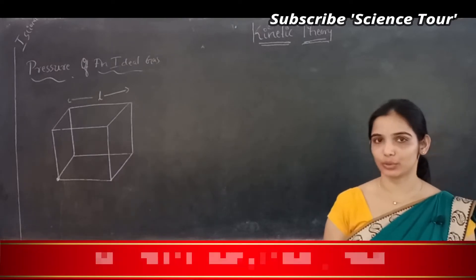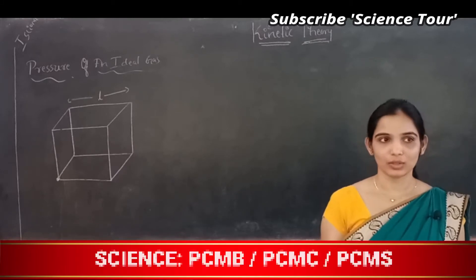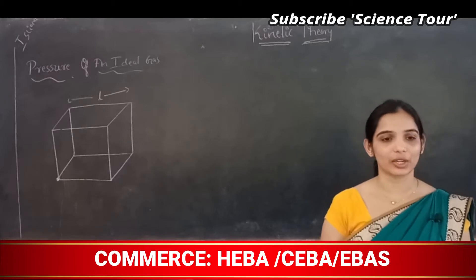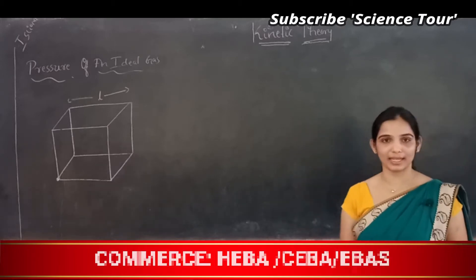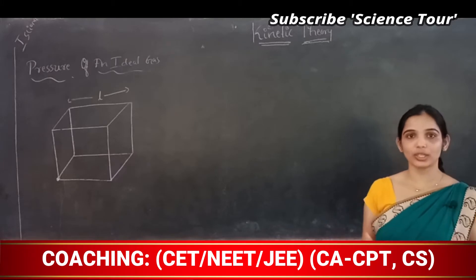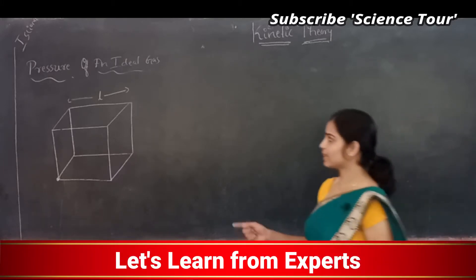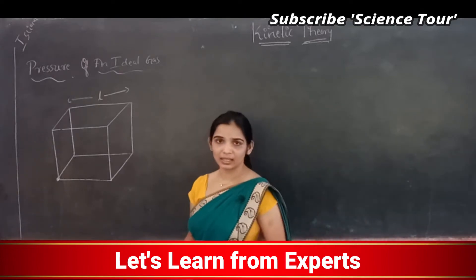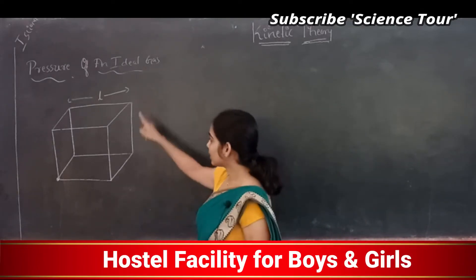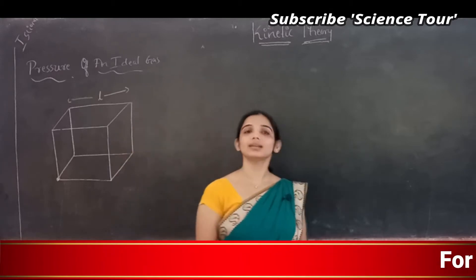Ideal gas is an imaginary gas which obeys Boyle's law and Charles's law. To find the pressure of an ideal gas, you should consider or imagine the ideal gas within a cube. Let's say the length of the cube is L. Then all the sides of the cube will be L, because a cube has equal sides.